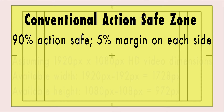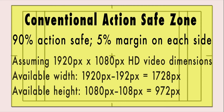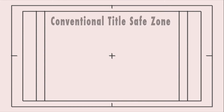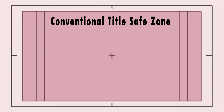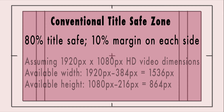The conventional action safe zone, assuming a 1920 by 1080 video dimension, gives you an available width of 1728 pixels and an available height of 972 pixels. The conventional title safe zone is a little smaller — that's the pink area. You only get 80% of the area to work with, which leaves a 10% margin on each side. Assuming 1920 by 1080 HD video dimensions, your available width will be 1536 pixels and available height will be 864 pixels.